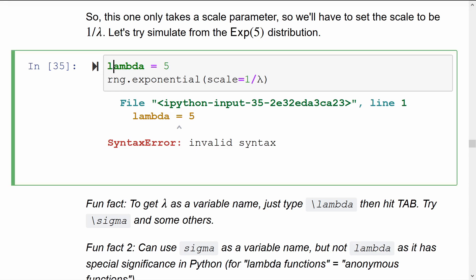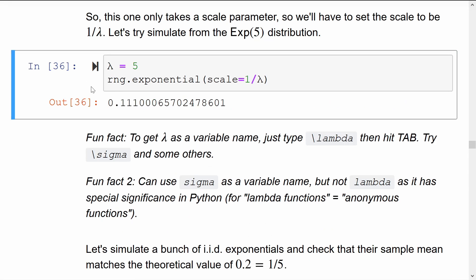Luckily, you can actually put in the Greek letters here if you'd like. So if I type backslash lambda and then hit tab, it'll automatically replace that with the Greek letter. And Python version 3 is perfectly happy to have this Unicode variable name. To generate this exponential, notice I use scale equals one divided by the rate.